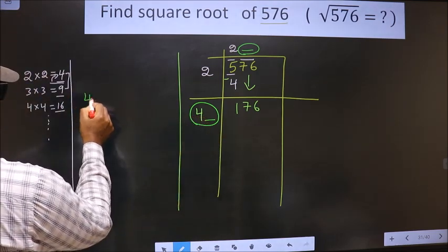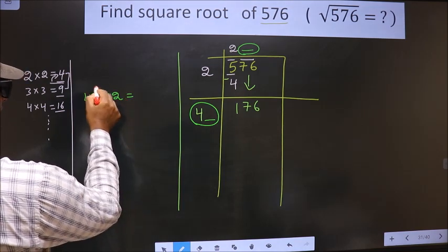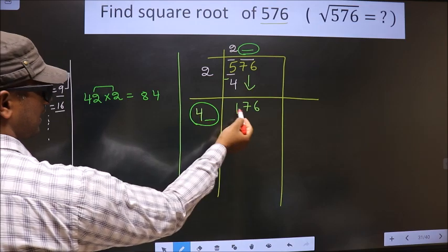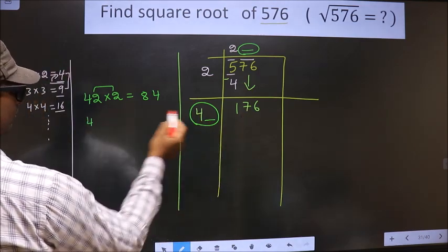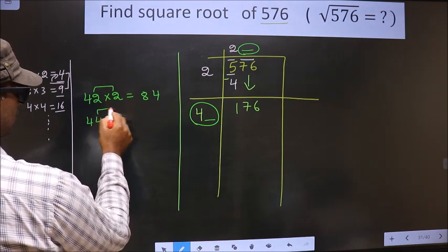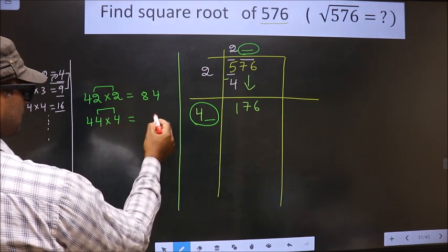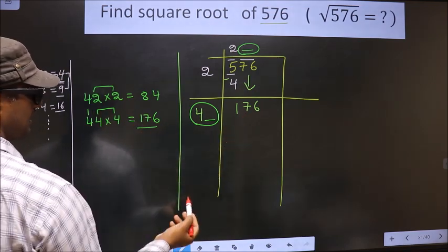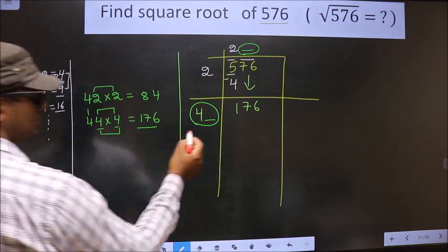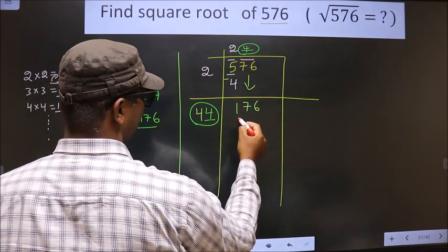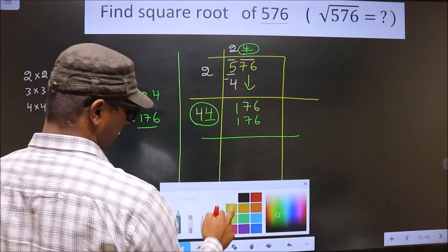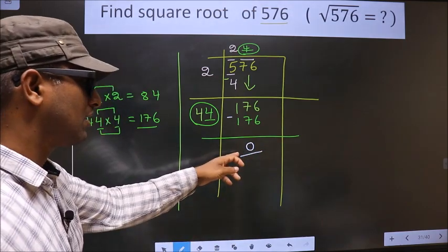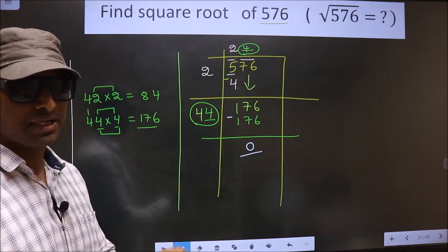If I take 2 here, then I should multiply 42 by 2: that gives 84, which is far away from 176. If I take 4 here, then I multiply 44 by 4: 4 into 4 is 16, carry 1, 4 into 4 is 16 plus 1 is 17. We get exactly 176 for the number 4. So we take 4 here and here also 4, and write 176.